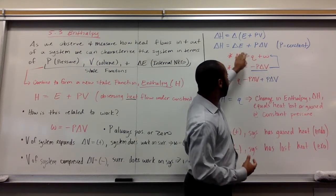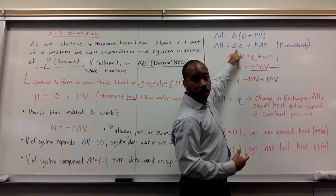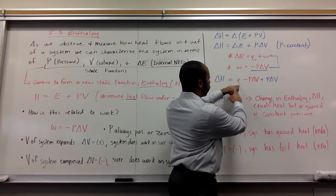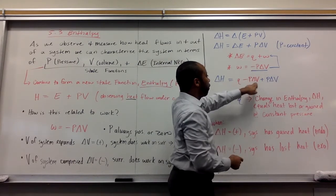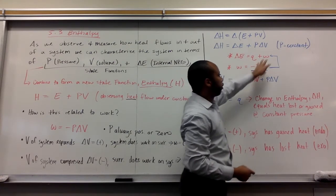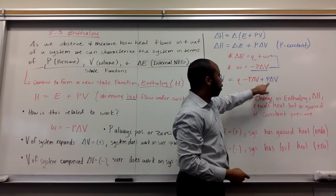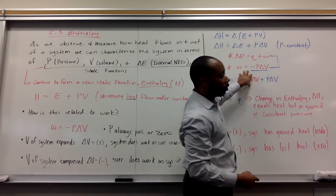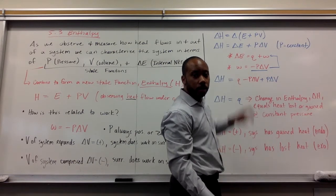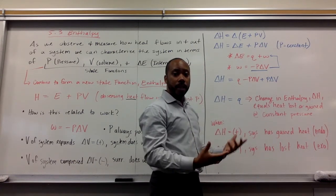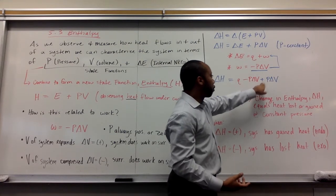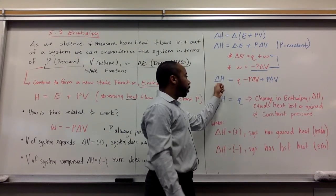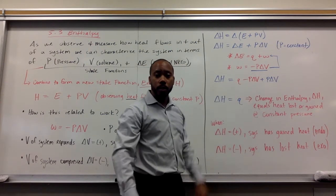If I plug delta e in for the delta e here, that's my substitution for work plus p delta v that I had originally up here. So this delta e here is just what's in red. If I simplify this, I get negative p delta v plus p delta v which cancels out. So your change in enthalpy is really just q, your heat.